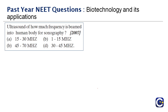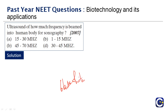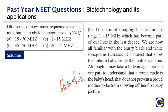Next question: ultrasound of how much frequency is beamed into the human body for sonography? Ultrasound imaging has a frequency range of about 1 to 15 megahertz, which has become part of our lives. We are familiar with the blurry black-and-white sonogram — especially pregnant women who see their unborn baby inside the uterus. The frequency used is 1 to 15 megahertz.